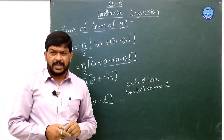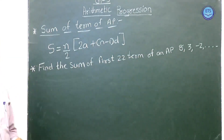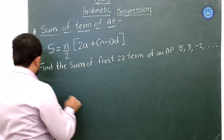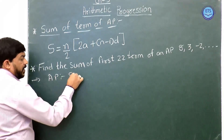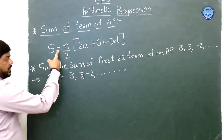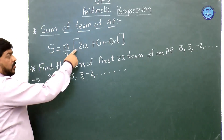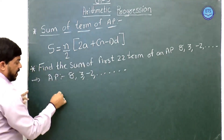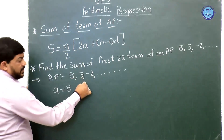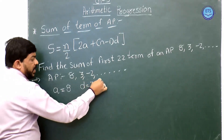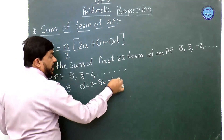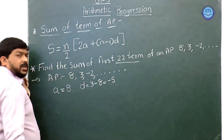Using this formula, let us consider one example. Find the sum of first 22 terms of an AP: 8, 3, minus 1 and so on. Here the AP is 8, 3, minus 2 and so on. Using the formula S = n/2 × [2a + (n-1)d]: first term a = 8, common difference d = 3 minus 8 = minus 5, and we are asked for the sum of first 22 terms, so n = 22.